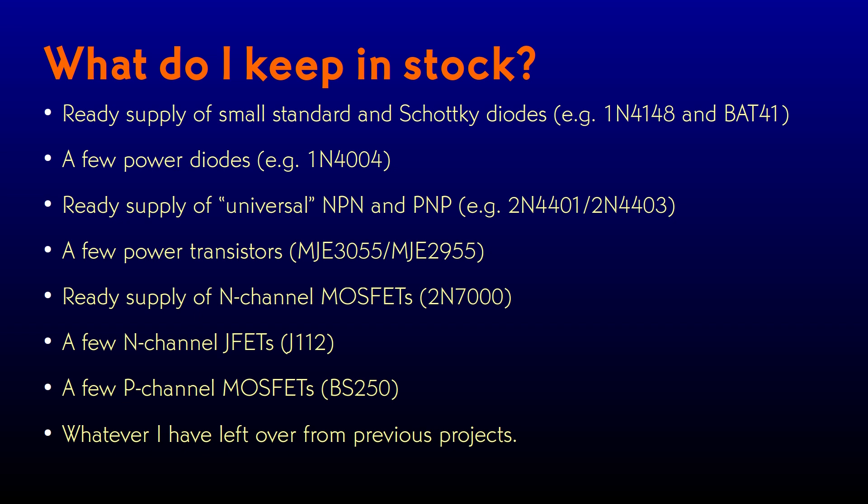In summary, the discrete parts that I like to keep on hand are: a pot full of small diodes both standard and Schottky, a handful of power diodes, a whole lot of universal BJTs, a few power BJTs and maybe Darlingtons as well, a bunch of 2N7000 MOSFETs, a few P-channel MOSFETs of whatever type I can find this year, a few N-channel JFETs where type isn't that important, and whatever specialty parts I have left over from previous projects. That lets me design almost any of my circuits while only having to order parts that are really specific to the project.